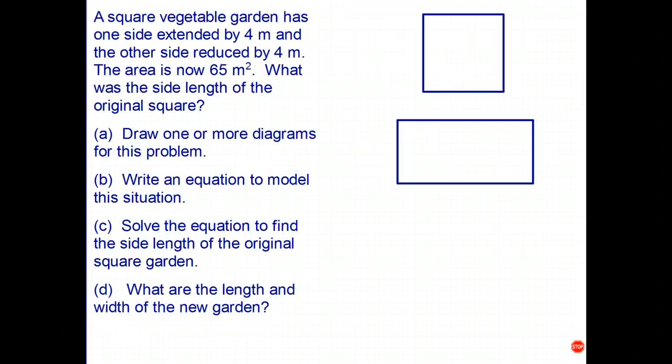Last problem. Let's read through the question first. You might want to try this one on your own before we go through it. A square vegetable garden has one side extended by four meters and the other side reduced by four meters. The area is now sixty-five square meters. What was the side length of the original square? Part A: draw one or more diagrams for this problem.